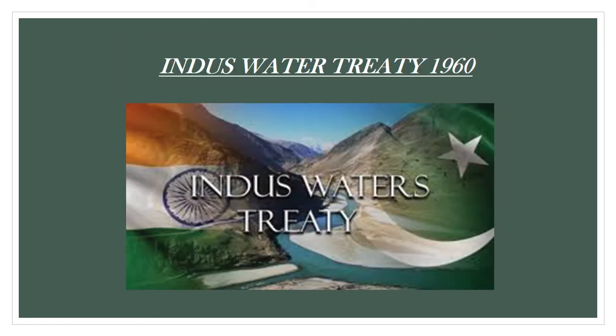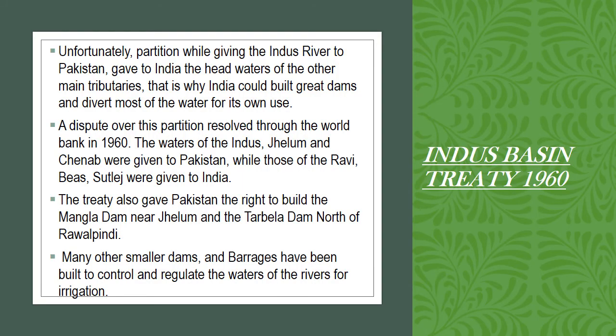Indus Water Treaty 1960 — the Indus Water Treaty or Indus Basin Treaty is basically an agreement between Pakistan and India. Unfortunately, when partition took place, the Indus River was given to Pakistan but its head tributaries were given to India through an agreement. This agreement was finalized and passed in 1960, named as the Indus Basin Treaty or Indus Water Treaty.